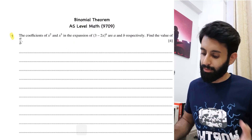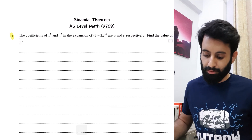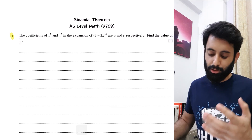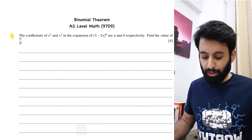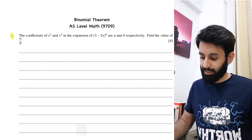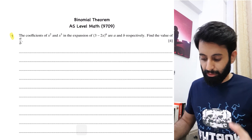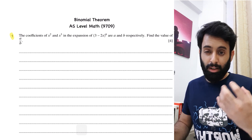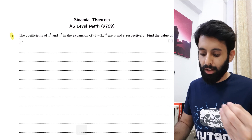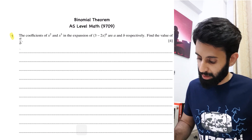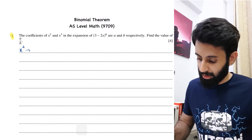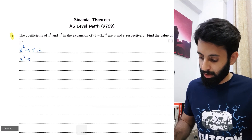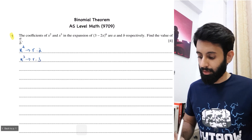Find the coefficient of x² and x³ in the expansion of (3 − 2x)⁶, and if the coefficients of x² and x³ are a and b respectively, find the value of a/b. Here x is in the second term, which you'll find very often. As long as x is to the power 1, r will always equal the required power of x. So for x² you plug in r = 2, and for x³ you plug in r = 3.